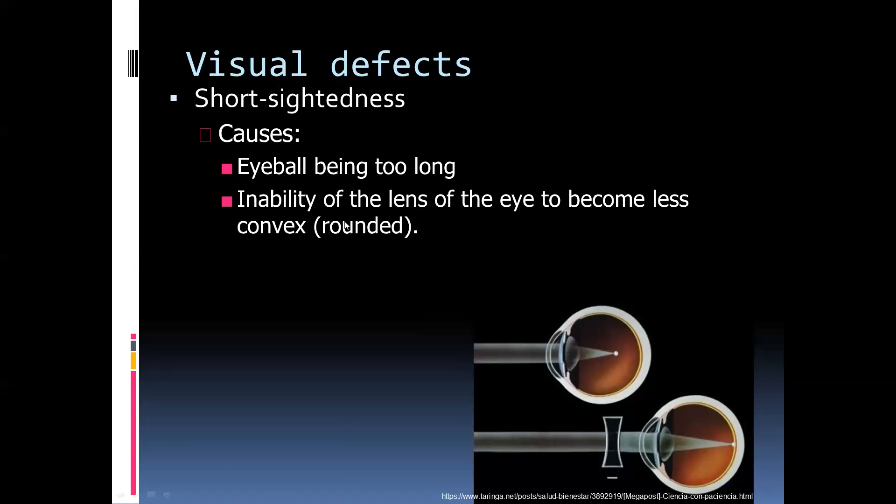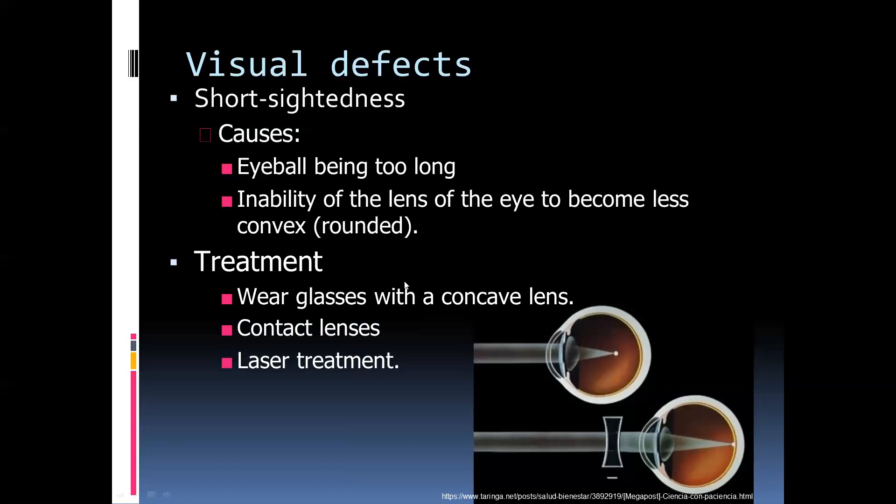Another cause can be the inability of the lens to become less convex. The lens is stuck in the shape of being more convex, which is suited for near vision. So a person can see near objects clearly, but when they look at something far, the lens is not becoming that thinner elongated shape. There's too much bending of the light when you look at distant objects and the image falls in front of the retina. To resolve this, glasses are produced with biconcave lenses. These lenses bend the light outward, so when the eye over-bends it inward, it balances on the retina. Other options include contact lenses or laser treatment.